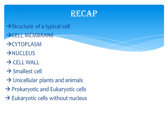We also discussed the smallest cell — remember, it was Mycoplasma gallisepticum. We also talked about unicellular plants and animals: bacteria and Chlamydomonas are unicellular plants, and Amoeba and Paramecium are unicellular animals. Please mark the spellings of Chlamydomonas, Paramecium, and Amoeba — these spellings should be learned carefully.